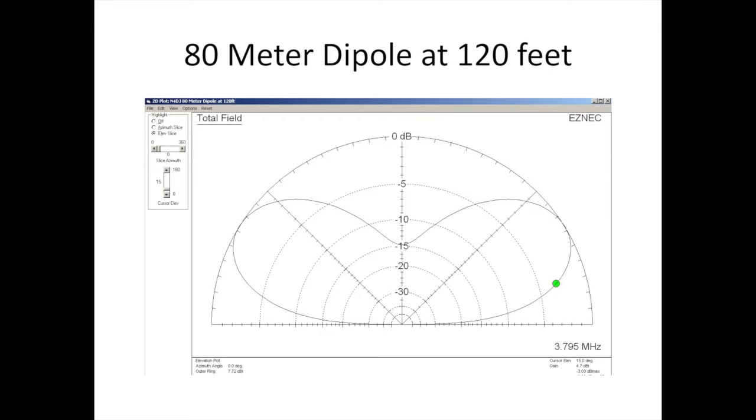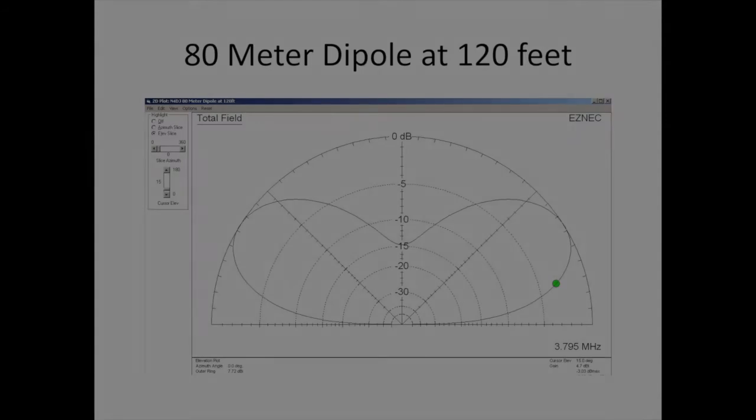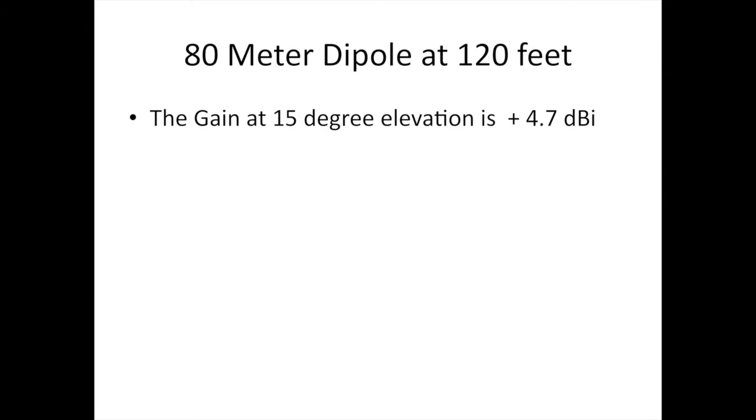Moving the dipole up to 120 feet, you get about 4.7 dBi gain. You're starting to form a pretty good elevation lobe. 4.7 dBi at 15 degrees with an 80 meter antenna 120 feet high. That's not bad, that's a pretty darn good antenna.